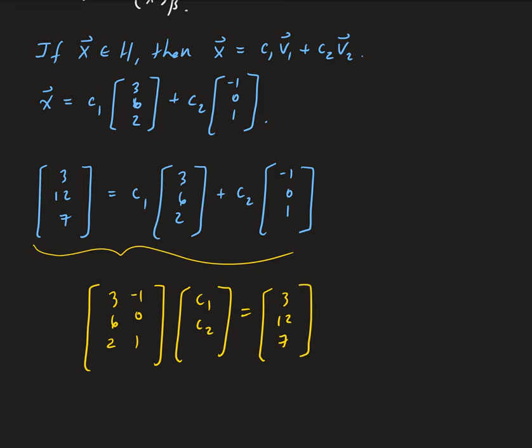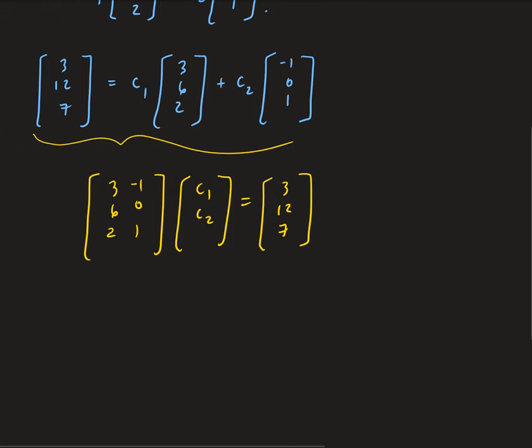All right, so from here now we can solve for C₁ and C₂. We can go ahead and augment this, write this in terms of a matrix and augment the X vector onto there. So we have [3, 12, and 7], and we can do a row reduction on this.